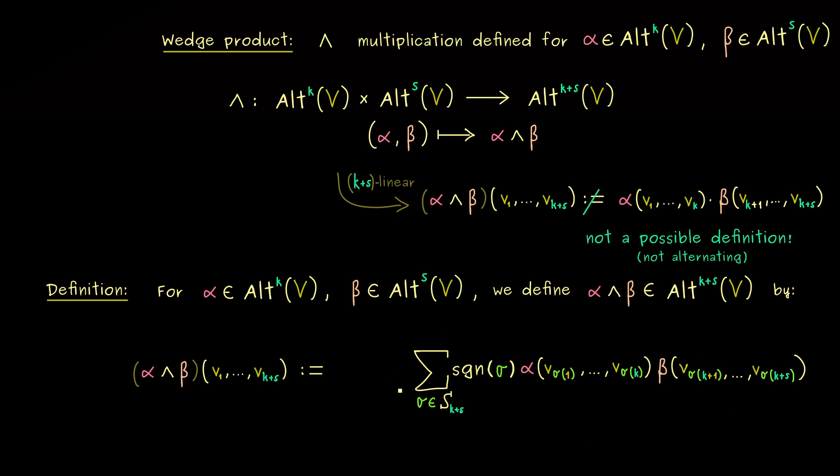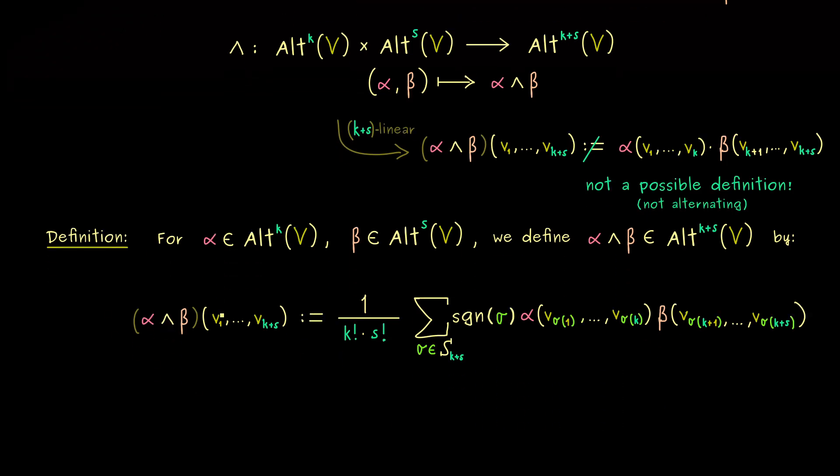However, in this case here, we want to add a little detail because with these permutations, we do more than we need. In fact, a lot of parts of the sum are repeated simply because, for example, a permutation that only changes something inside alpha here will not change the overall value of the part of the sum. So this is not a problem for the alternating part, but it changes the actual number that comes out here for this form. Hence, in order to normalize this number, we will divide by the number of these repeated parts. So indeed, we have k! possibilities inside alpha and s! possibilities inside beta. And now we are finally done. This is the whole definition for the wedge product of alternating forms.